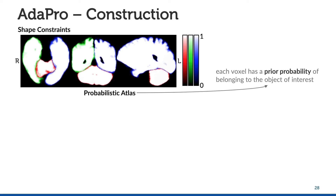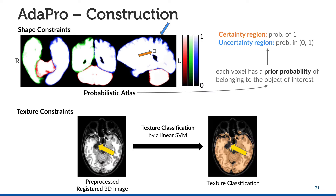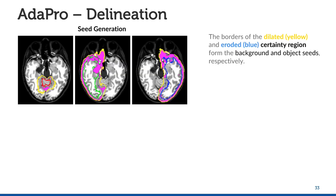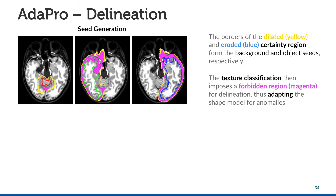For shape constraints, we first build a probabilistic atlas from a set of training atlases, where each voxel has a prior probability of belonging to the object of interest. The voxels with prior probability of 1 form the certain region of the shape model, whereas the uncertain region corresponds to all voxels with prior probability between 0 and 1. Our shape model is adapted through texture constraints provided by a texture classifier. This classifier ignores non-target tissues, such as anomalies, CSF, and bones. Adapro relies on a region-growing method by seed competition for object delineation. The borders of the dilated and eroded certain region form the background and object seeds, respectively. The texture classification then imposes a forbidden region for delineation, thus adapting the shape model for anomalies.